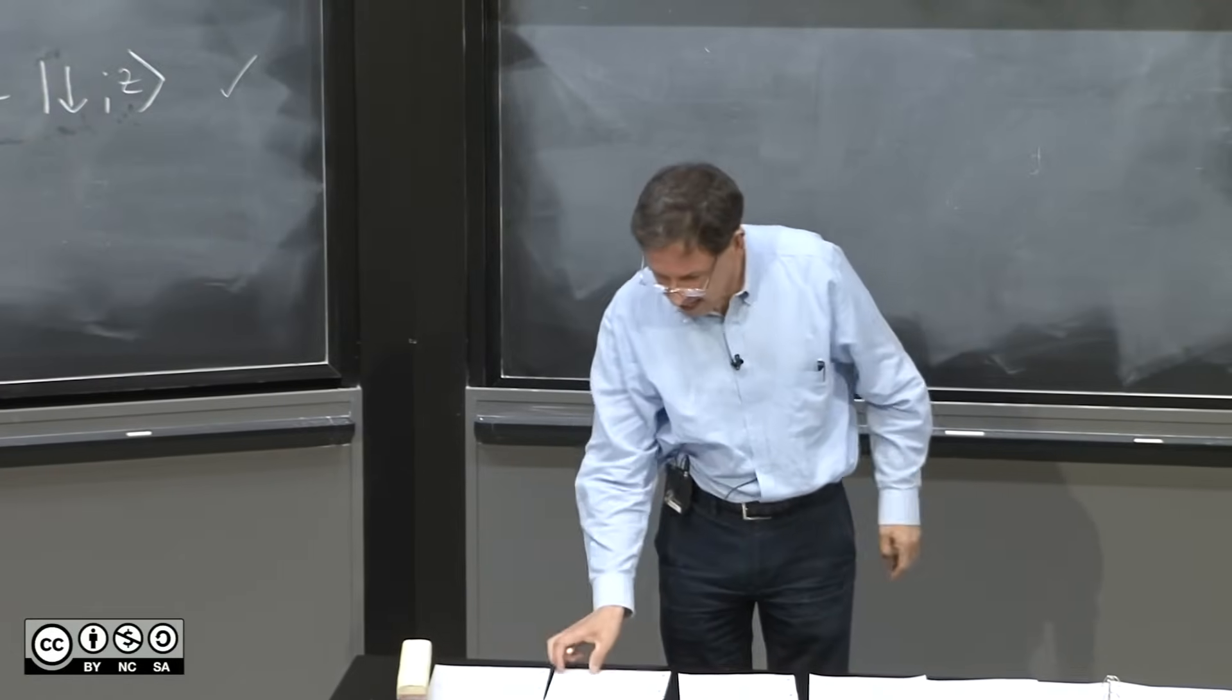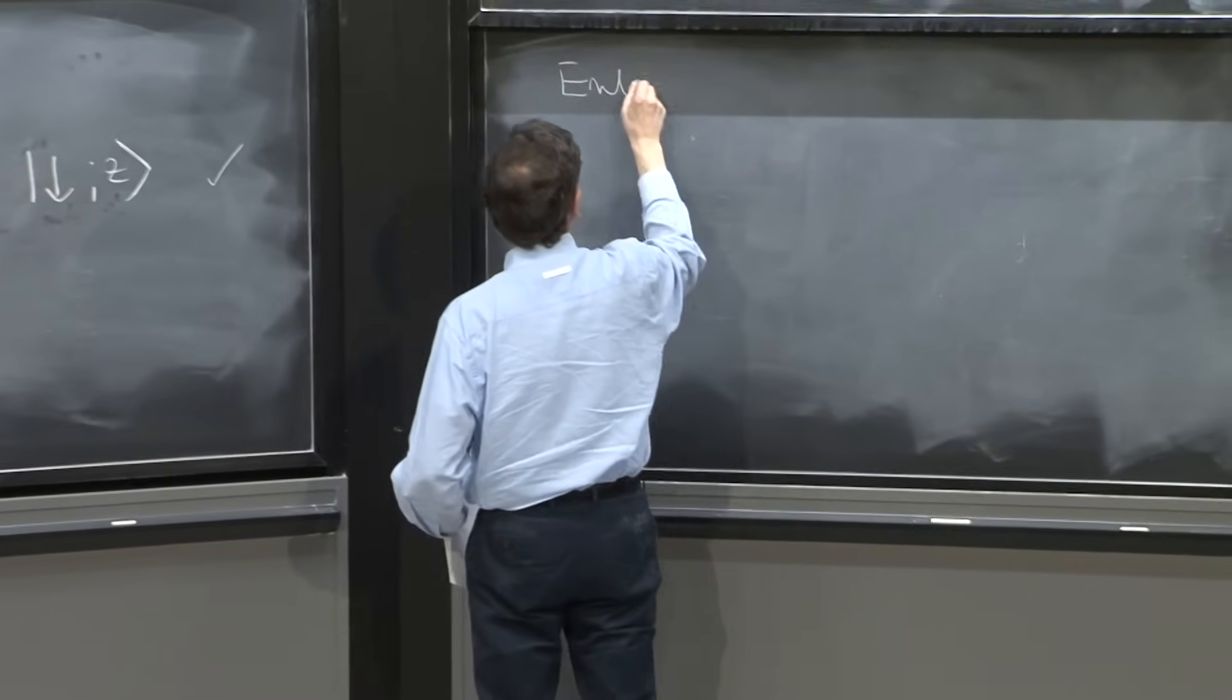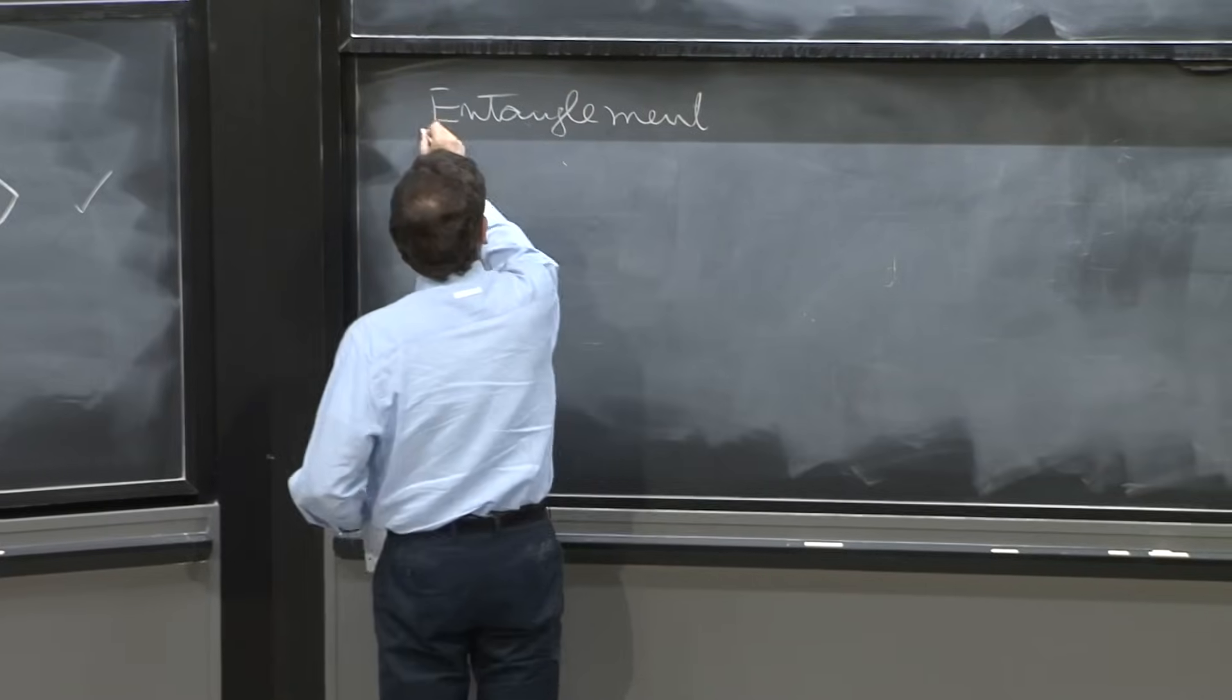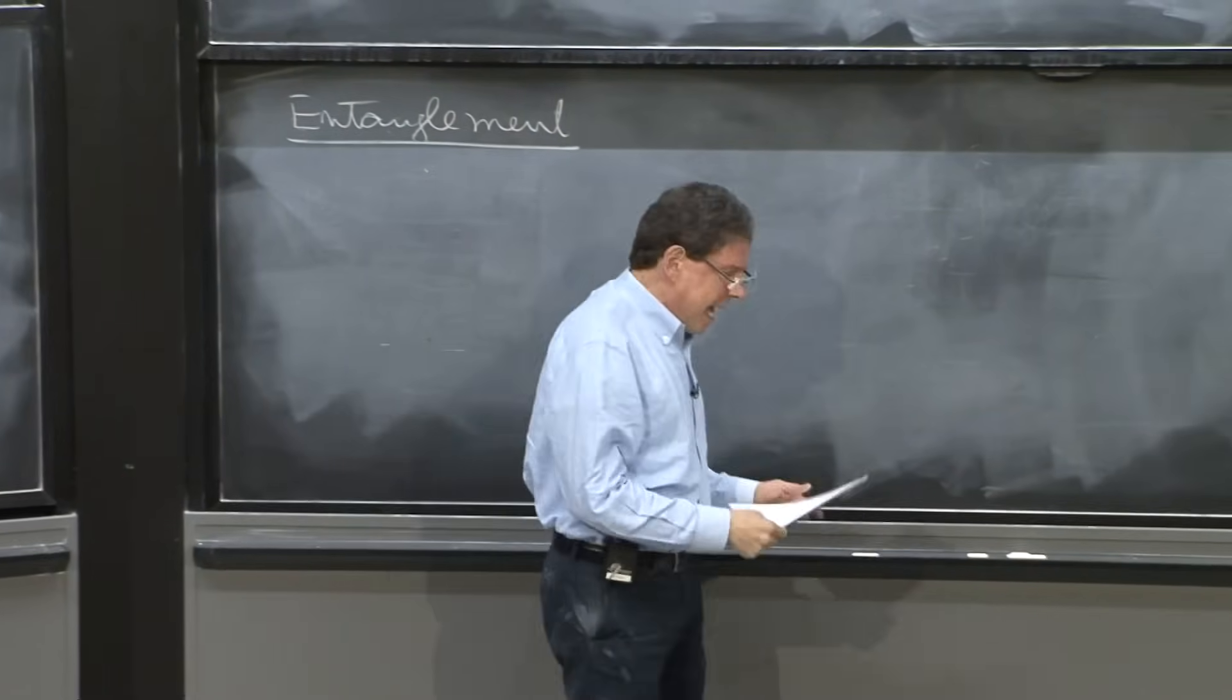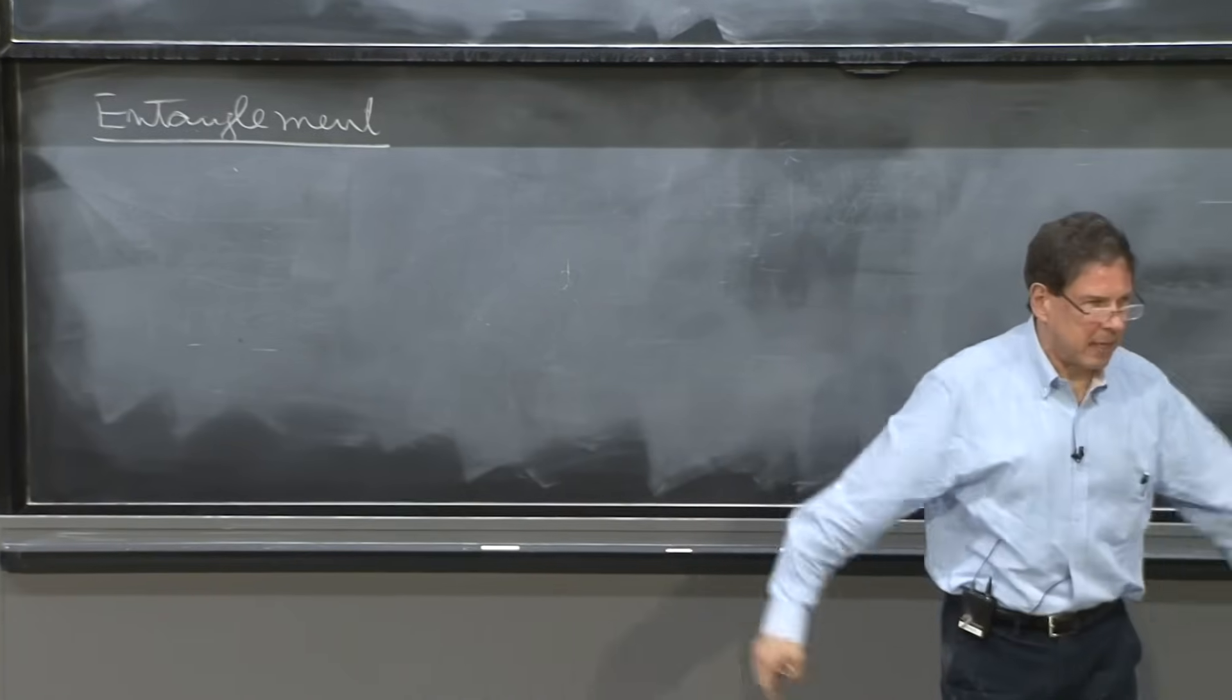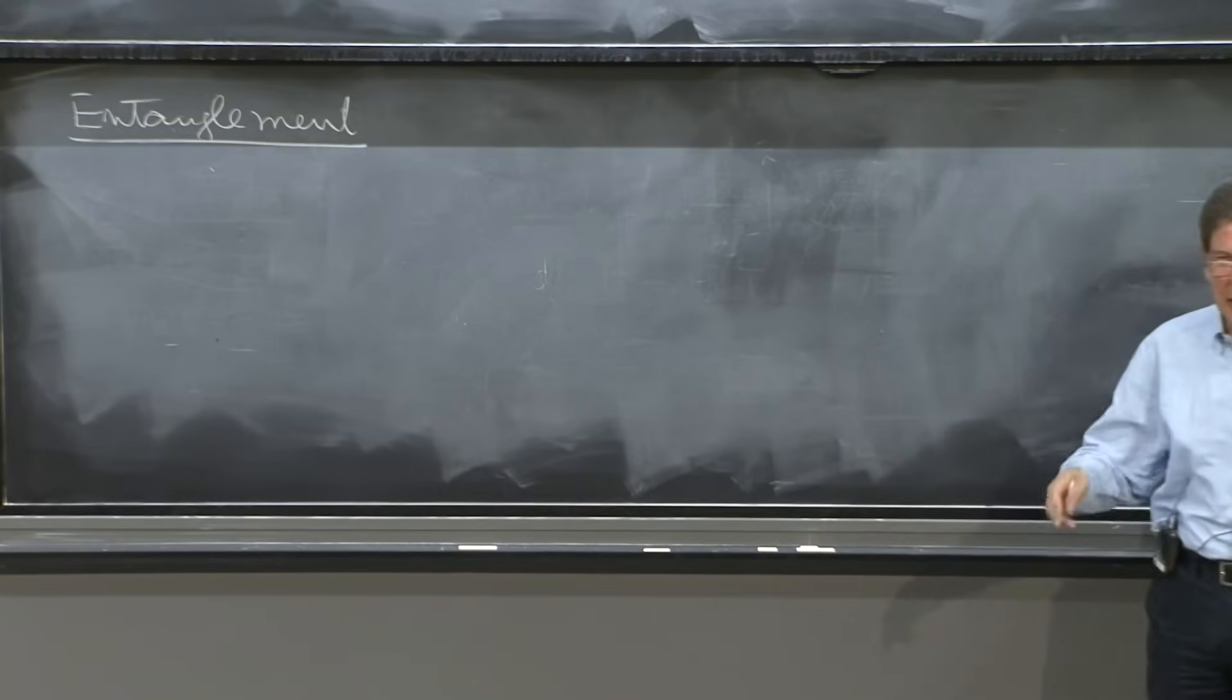Let's talk now about entanglement. We talk about entanglement when we have two non-interacting particles. You don't need a strong interaction between particles to produce entanglement.